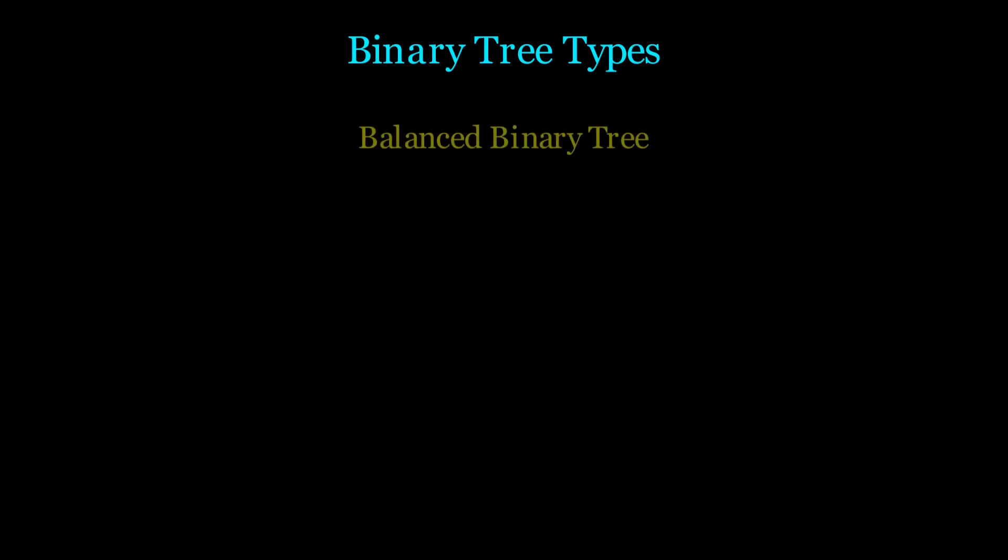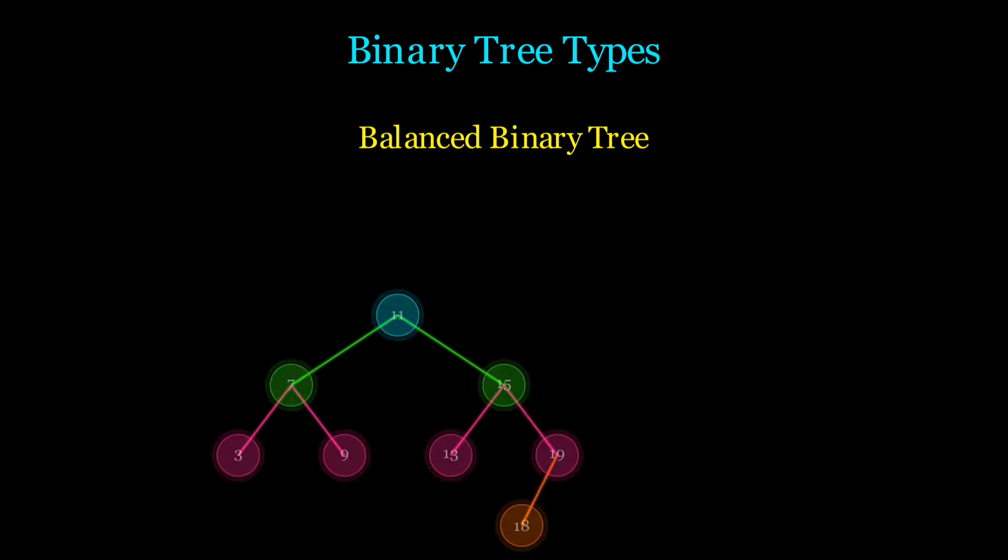First, the balanced binary tree. This is a tree where the height difference between the left and right subtrees of any node is at most one, ensuring order of log n for all operations.